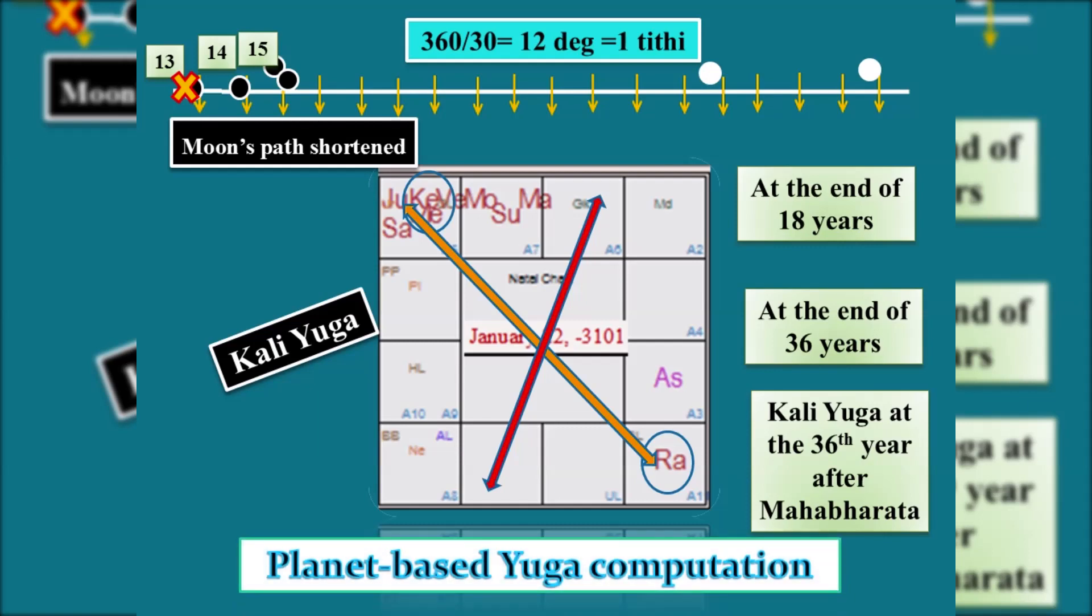But alas, we are not at all aware of it. Why? We don't know the fundamentals. We never understand that a lunation or an Amavasya cannot take place on a thirteenth day.